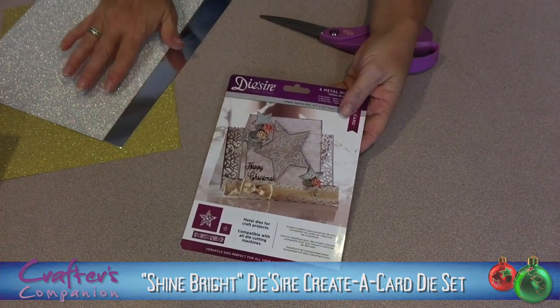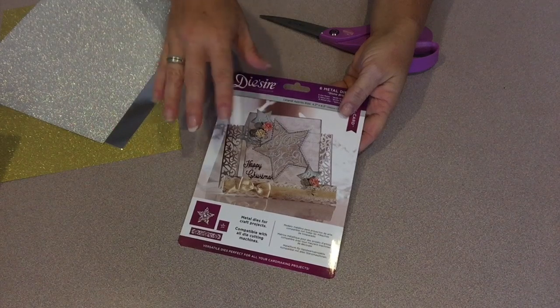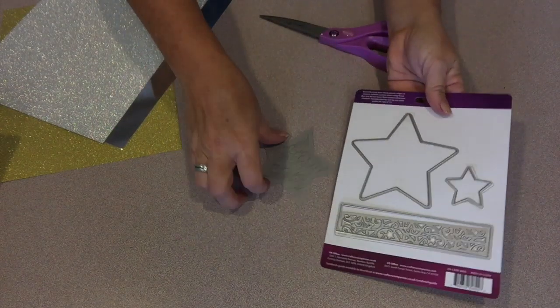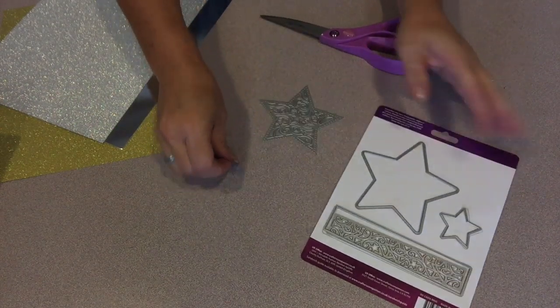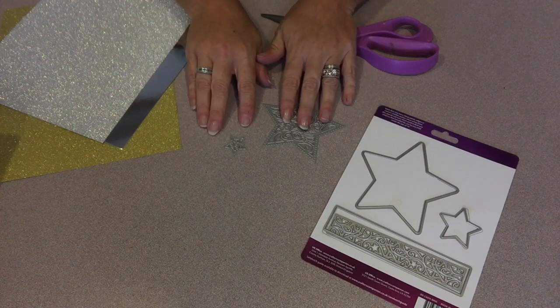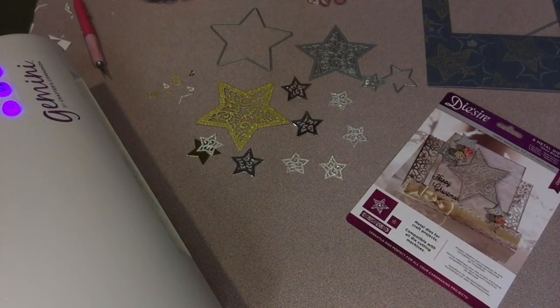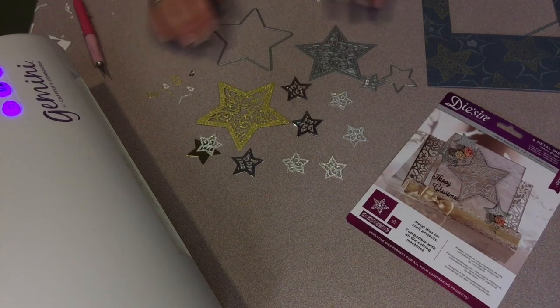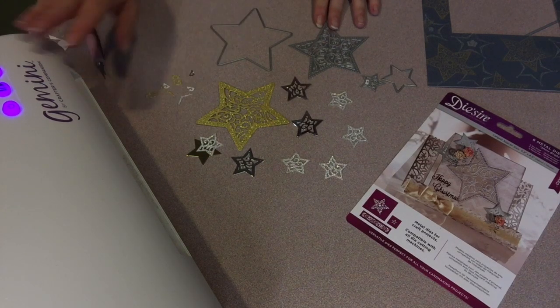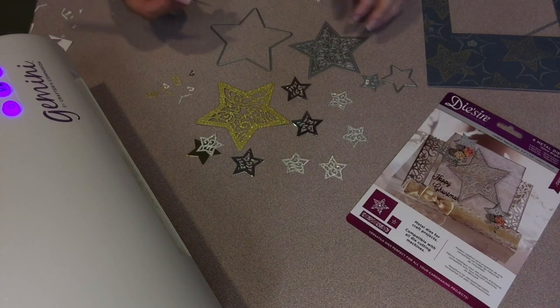I'm going to use a combination of the outer stars and the inner stars, and I'm also going to use a mixture of the cardstocks. I followed the instructions again and cut my assortment of stars, and now I'm ready to start layering them onto the stamped mat.